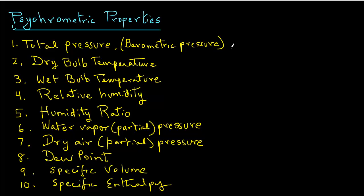These properties that we will examine in more detail are: total pressure, also called barometric pressure with symbol PB; dry bulb temperature TA; wet bulb temperature TW; relative humidity, symbol phi; humidity ratio W; partial pressure of water vapor PW; partial pressure of dry air PA; dew point temperature; specific volume with symbol V dash; and specific enthalpy, symbol H.